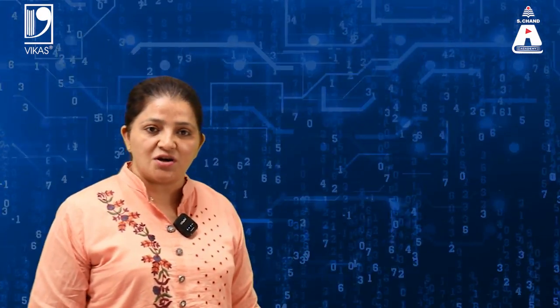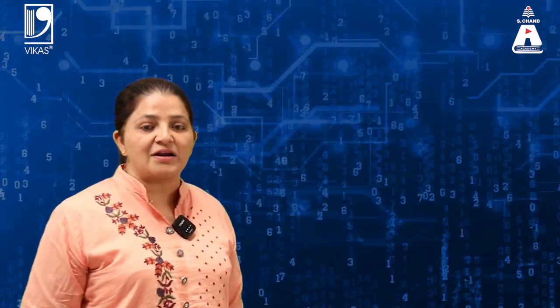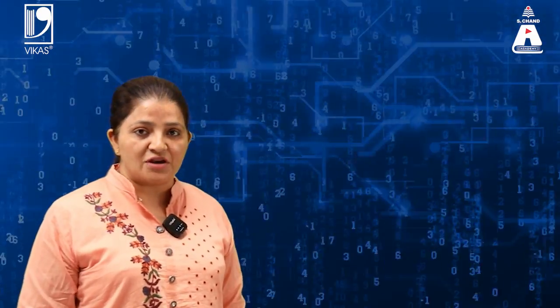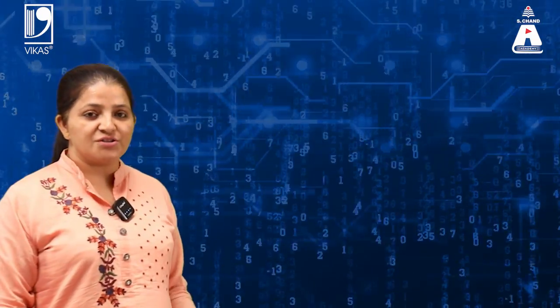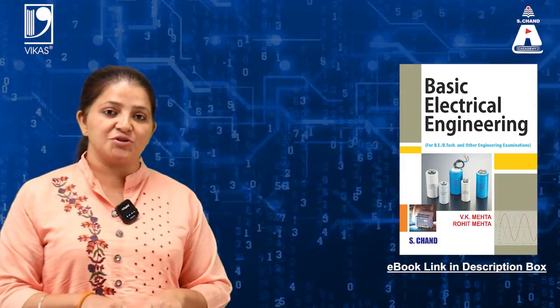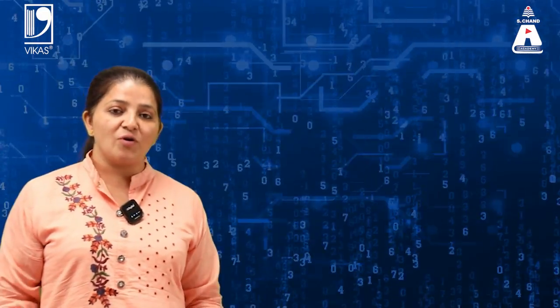Now this is part 2, where we have studied about the BH curve and also studied why ferromagnetic materials are preferred in order to form the core of the transformer. If you want to study this topic in detail, kindly refer this book by S. Chand Publishing. Ebook link description is given in the description box.